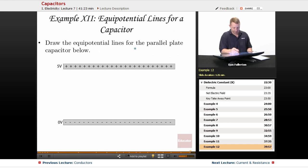Draw the equipotential lines for the parallel plate capacitor below. The way I would do this to start off with would be to draw the electric field. The electric field we know goes from positive to negative, so let's draw some electric field lines here first.